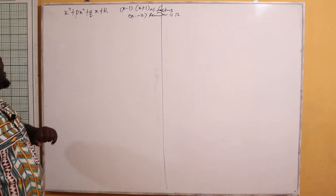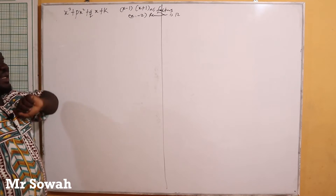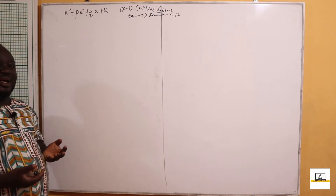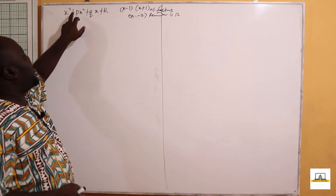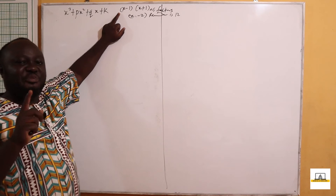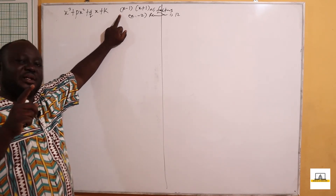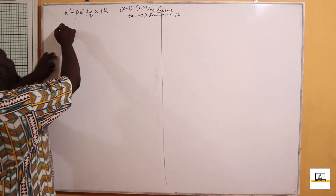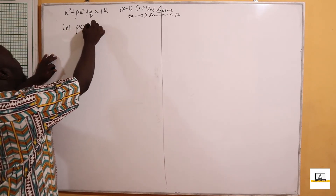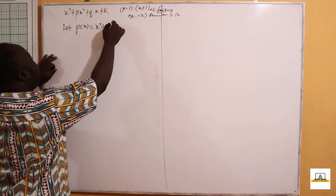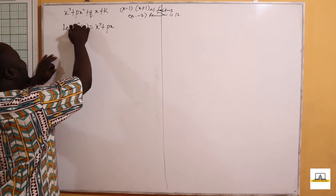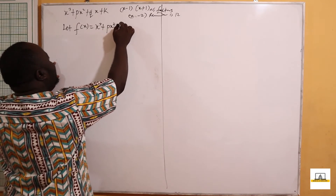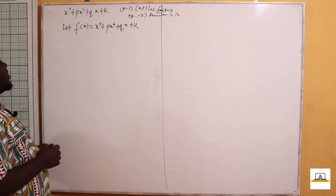In the cubic function, we are told that x cubed plus px squared plus qx plus k has x minus 1 and x plus 1 as factors. If x minus 1 and x plus 1 are factors, it means that if we divide this expression by x minus 1, we get a remainder of zero. Let f(x) be equal to x cubed plus px squared plus qx plus k.